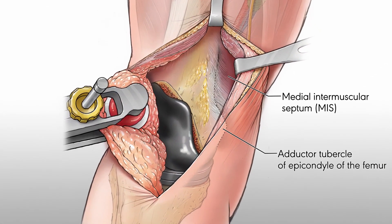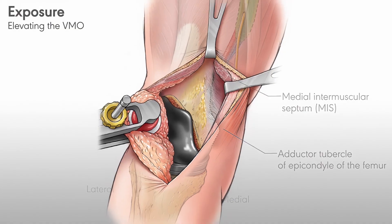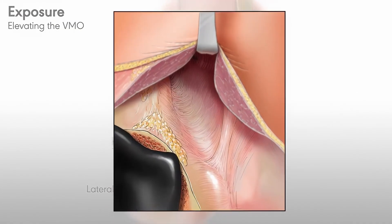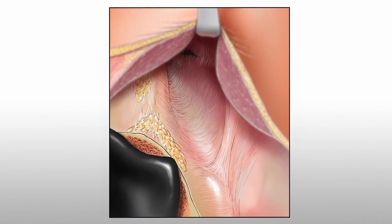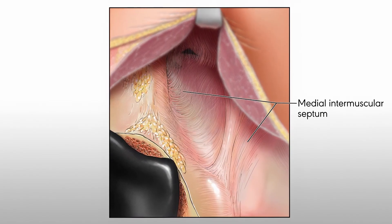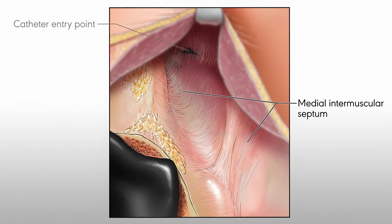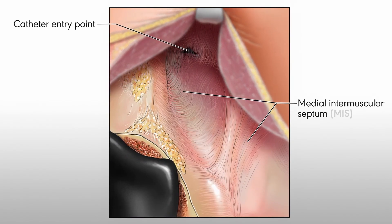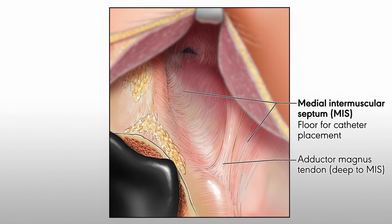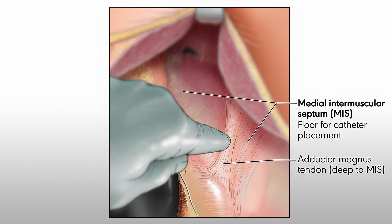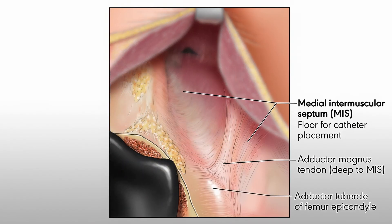Identify the adductor tubercle of the epicondyle of the femur. Retract the VMO with blunt retractors to expose both the anterior surface of the medial intermuscular septum and the catheter entry point. The medial intermuscular septum, which serves as the floor for the catheter placement, is readily visualized and lies just anterior to the adductor tendon. The adductor tendon can be palpated beneath the intermuscular septum as it inserts into the adductor tubercle.